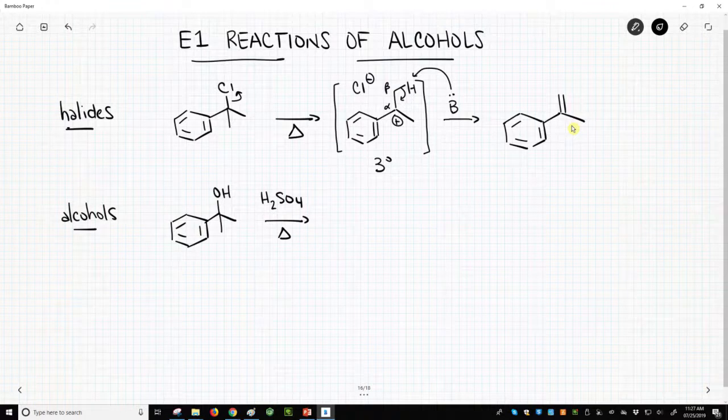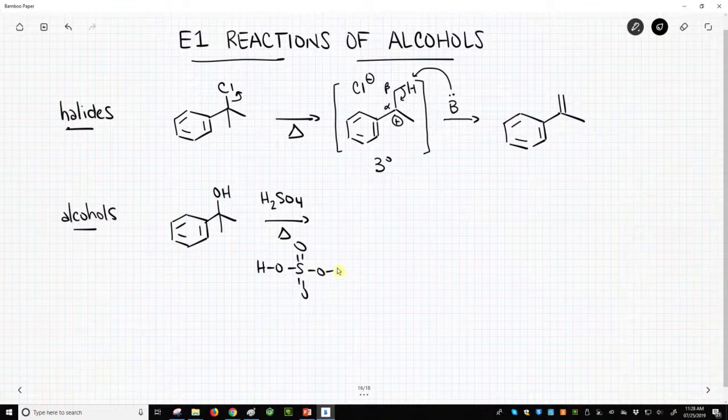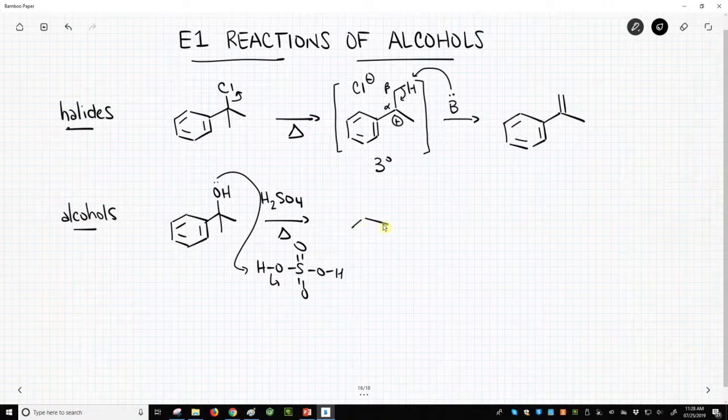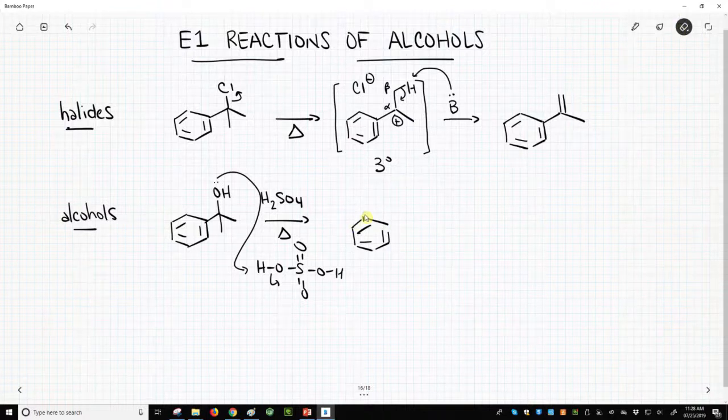Almost the exact same thing happens with alcohols instead of halides. So alcohols, however, we don't have a good leaving group. So we're going to protonate first. We will almost... We will always have an acid in these reactions, and our strong acid, in this case I'm using sulfuric acid, will protonate our alcohol. Oops, I cheated a couple carbons out of there. Let's get that right.